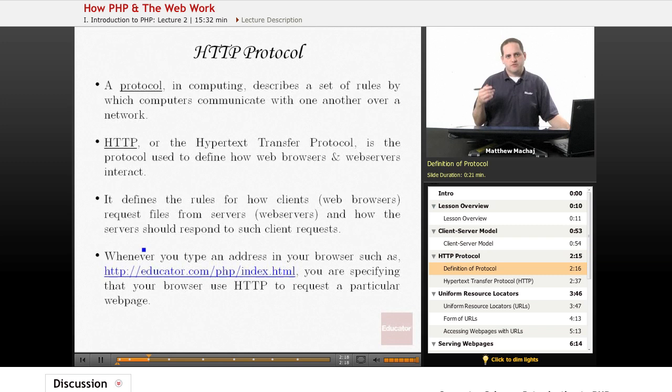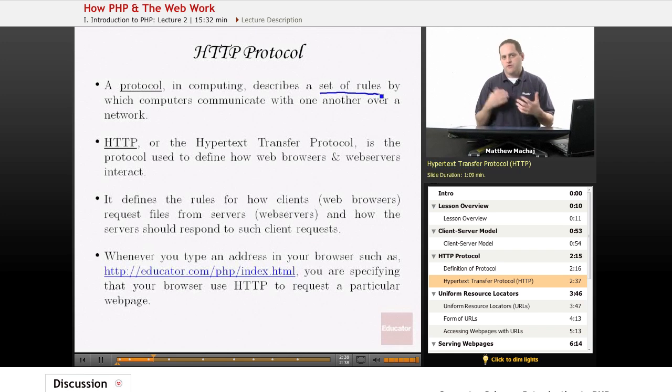So we know that the web uses a client server model for accessing web pages. And the way it does so is it uses a set of rules or protocols. And in computing, protocols are basically a set of rules that denote how computers communicate with each other over a network. And there are a number of different protocols out there. The one that's used in the web to browse to web pages, which you may have heard of, and you might recognize from URLs that you've entered into the address bar of your browser, is HTTP, or it's formally known as the Hypertext Transfer Protocol.